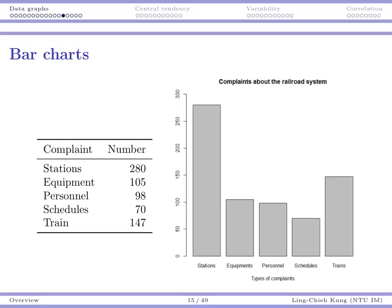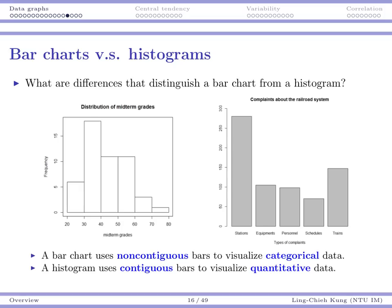You may start to feel confused because we have mentioned two similar but different things: the histogram and the bar chart. The difference is that a bar chart uses non-contiguous bars — you can see there are gaps between them — to visualize categorical data. Categories like stations, equipment, and personnel are nominal data: there is no rank and you cannot perform arithmetic on them. When data is categorical, we use a bar chart.